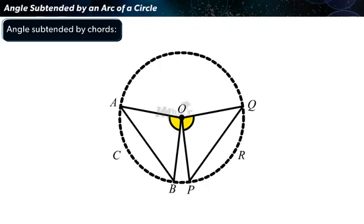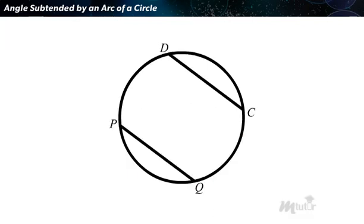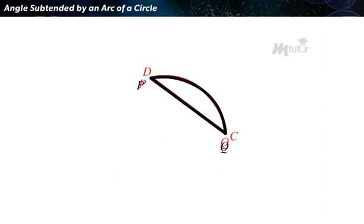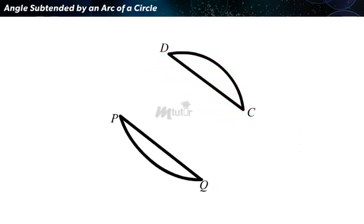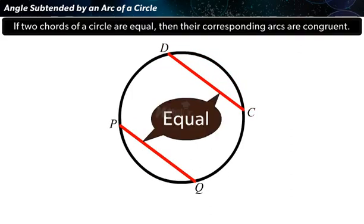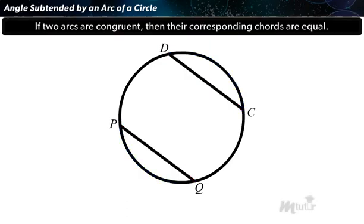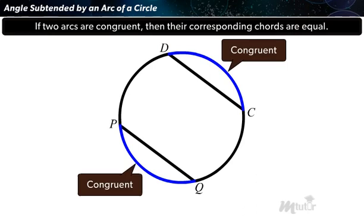In the previous lesson, we learnt about the angles subtended by chords of a circle. Let's now see more about the arcs formed corresponding to the chords. Let PQ and CD be two equal chords. By cutting the two arcs, you will find that the arc CD superimposes the arc PQ completely. They are congruent in the sense that if one arc is put on the other without bending or twisting, one superimposes the other completely. Thus, if two chords of a circle are equal, then their corresponding arcs are congruent. And conversely, if two arcs are congruent, then their corresponding chords are equal.